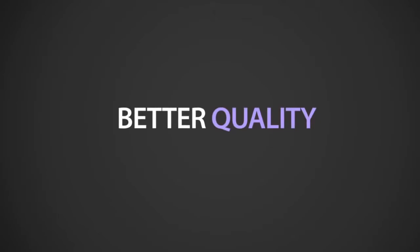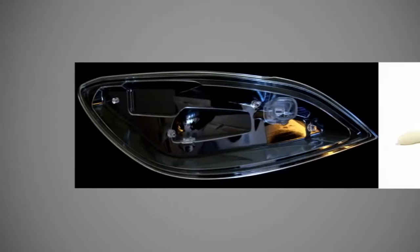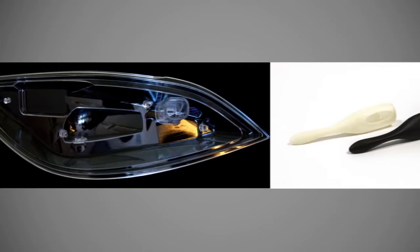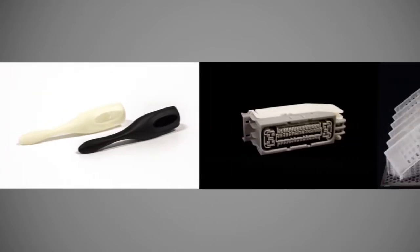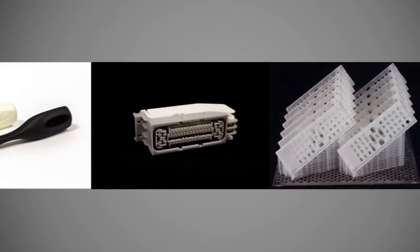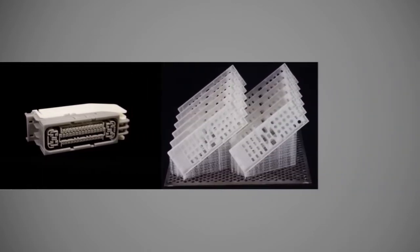The Projet 6000 and 7000 deliver legendary SLA quality and precision. The super smooth surface finish and fine detail for small parts make this a perfect fit for snap fit assemblies, functional prototypes, master and direct casting patterns, and more.